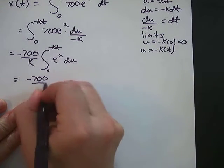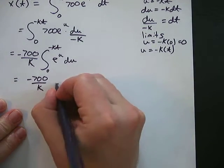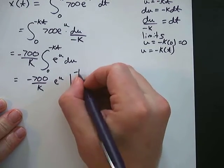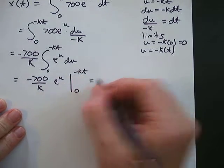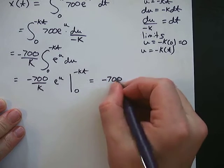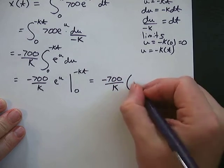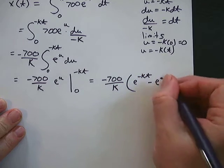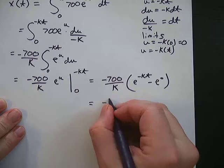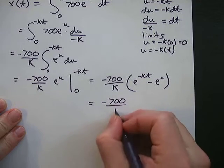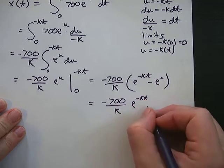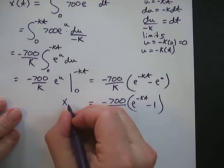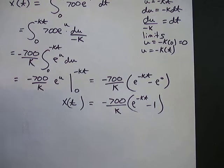Evaluating negative 700 over k times e^u from 0 to negative kt gives us negative 700 over k times (e to the negative kt minus e to the 0), which simplifies to negative 700 over k times (e to the negative kt minus 1). So that is x(t).